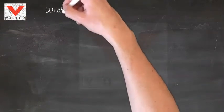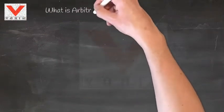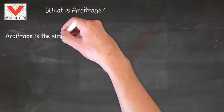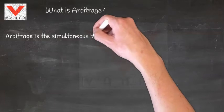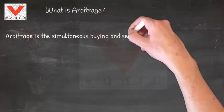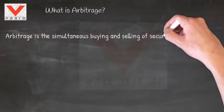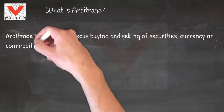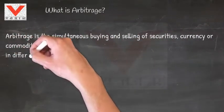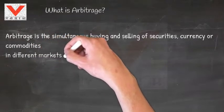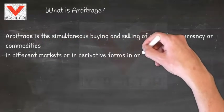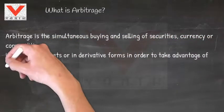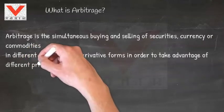What is Arbitrage? Arbitrage is the simultaneous buying and selling of securities, currency or commodities in different markets or in derivative forms in order to take advantage of different prices for the same asset.